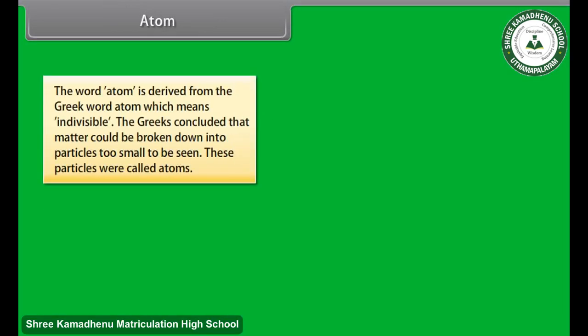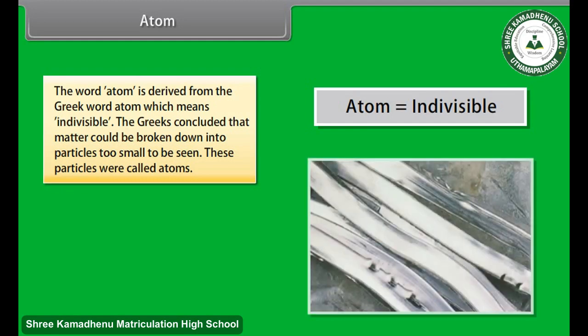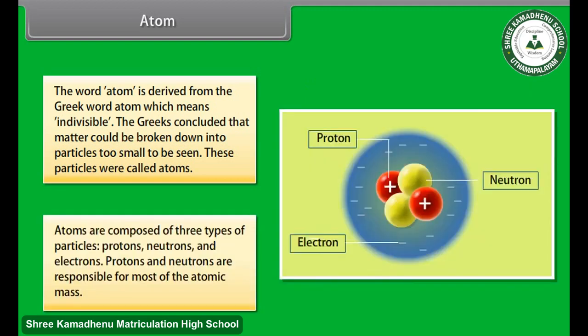Atom. The word atom is derived from the Greek word atom, which means indivisible. The Greeks concluded that matter could be broken down into particles too small to be seen. These particles were called atoms. Atoms are composed of three types of particles: protons, neutrons and electrons.